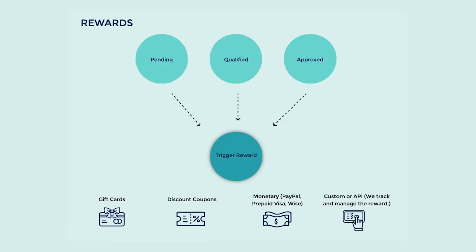Referral statuses also tell Referral Rock when to reward your members and referrals. When it comes to rewards, Referral Rock can automate the fulfillment of coupons, hundreds of retail gift card options, as well as cash alternative rewards such as Visa, MasterCard, prepaid cards, PayPal, and ACH transfers through Wise. Now if you want to reward with something custom like, for example, swag, then Referral Rock can act as a digital ledger to inform you when someone has earned a reward and you can connect with our API or Zapier to process fulfillment.